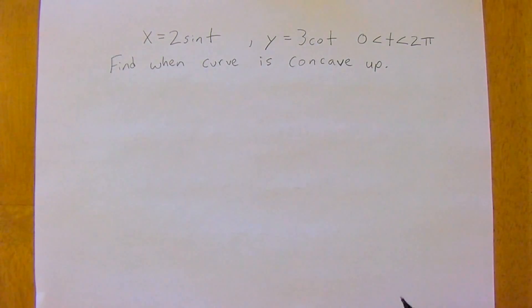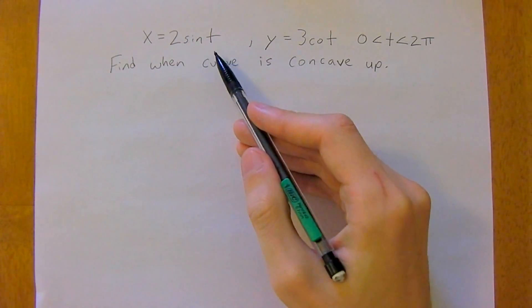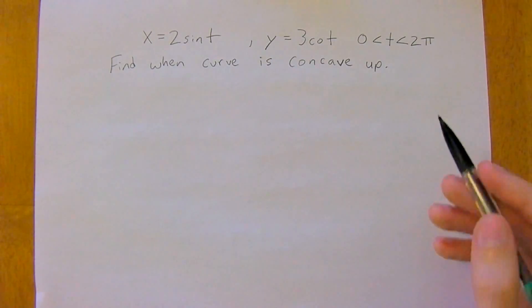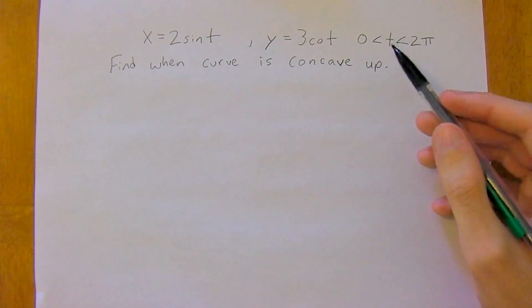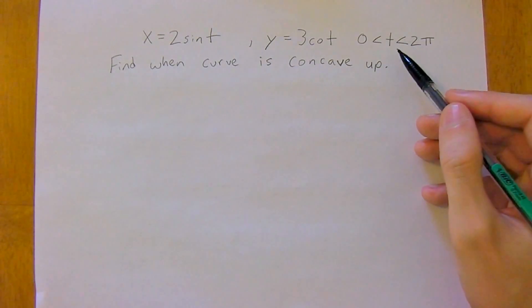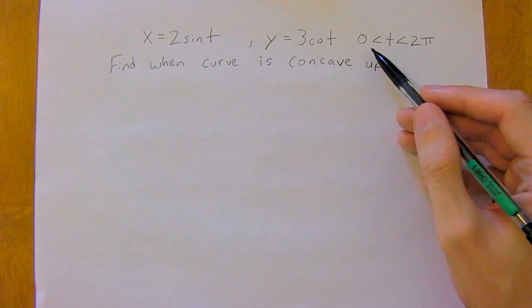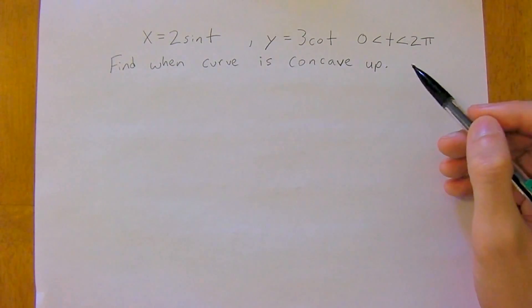I've got one more example for you here, and we're going to work with sines and cosines this time. And we're going to have t, so we're going to bind it between t is greater than 0 but less than 2π.